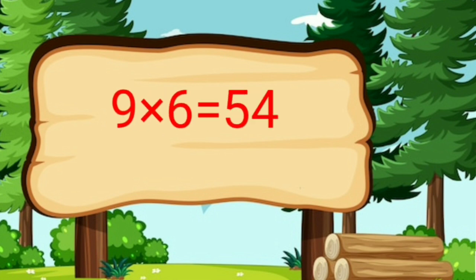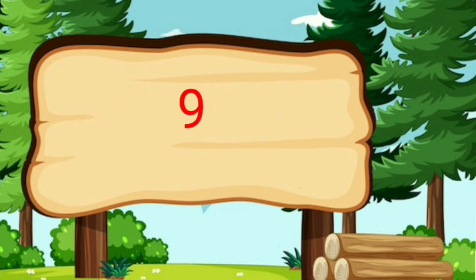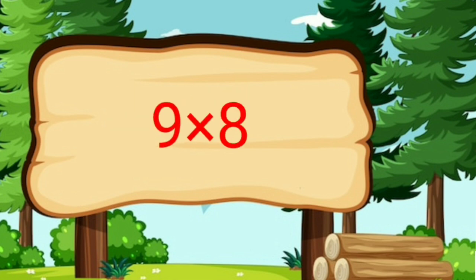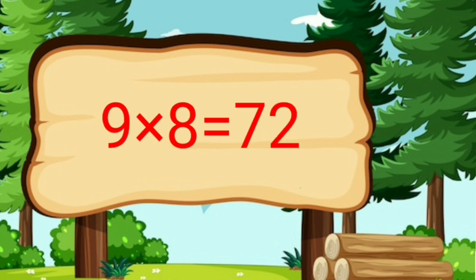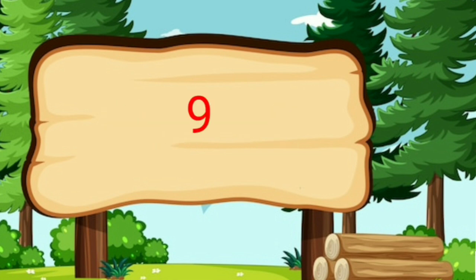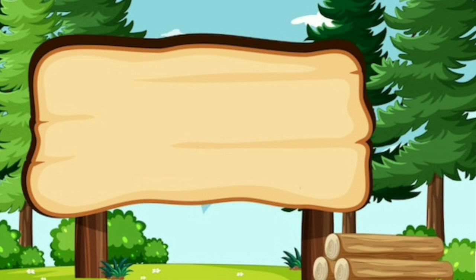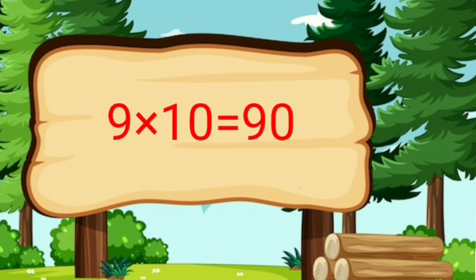Table of 9. 9 sixes are 54. 9 sevens are 63. 9 eights are 72. 9 nines are 81. 9 tens are 90.